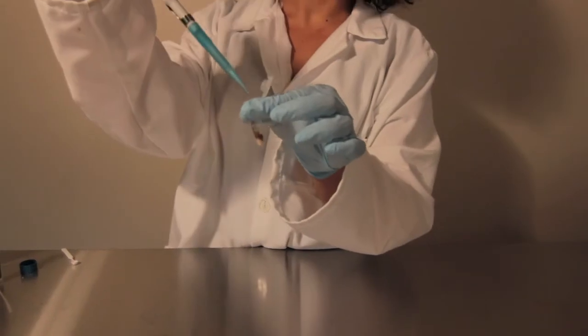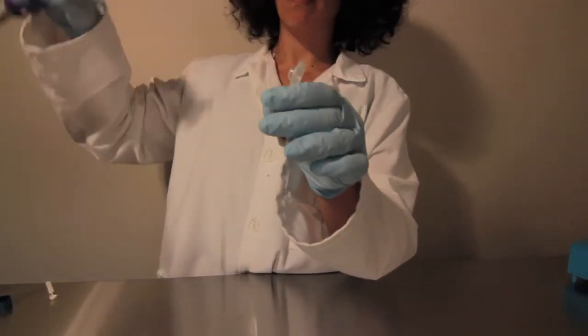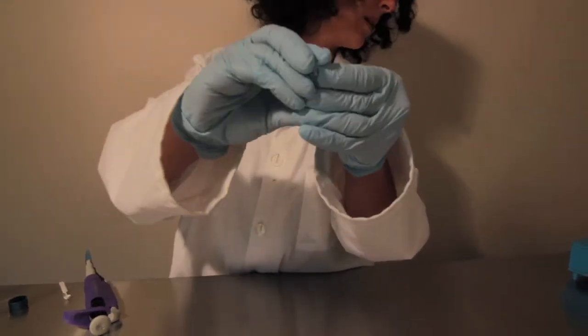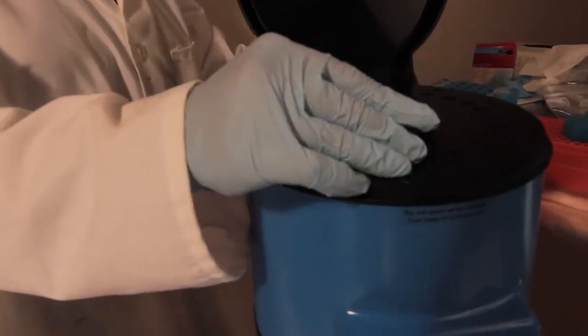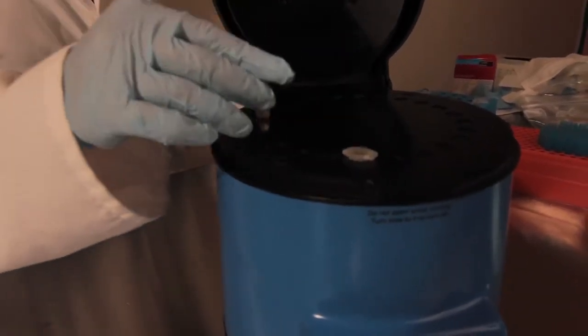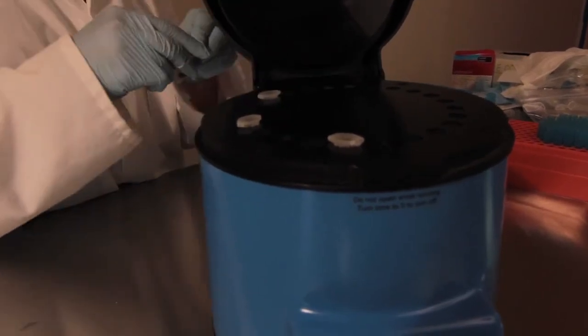Finally, add a volume of buffer or reagent that is twice the volume of beads that you're using. Now, completely close the caps of your tubes and place them evenly spaced inside of the Bullet Blender. I have 8 samples loaded. I'm going to set the speed to 8 and the time to 3 minutes, close the lid, and press Start.